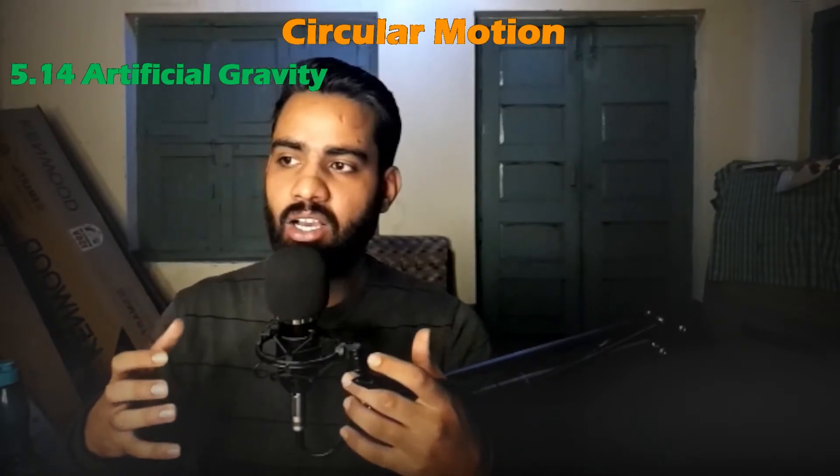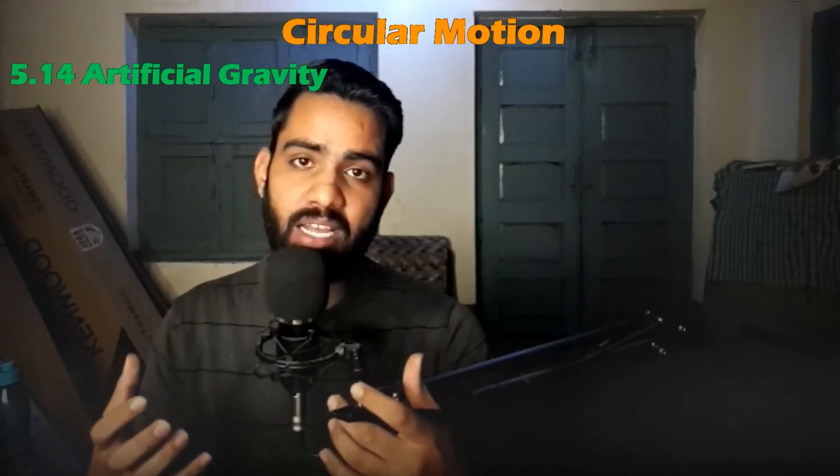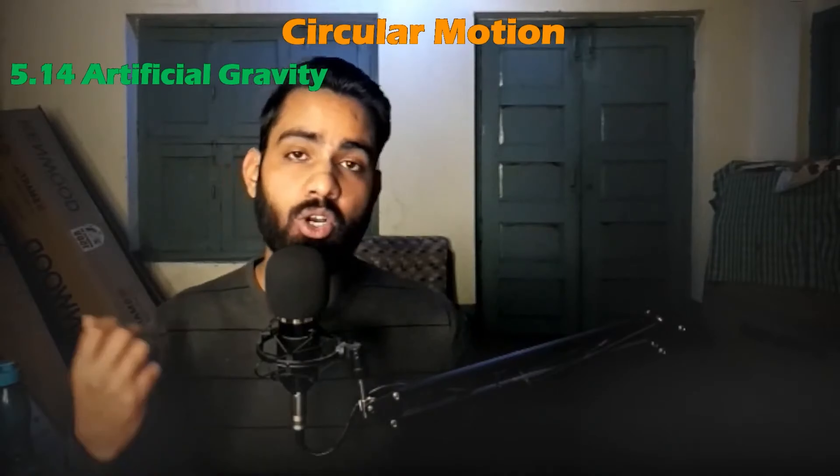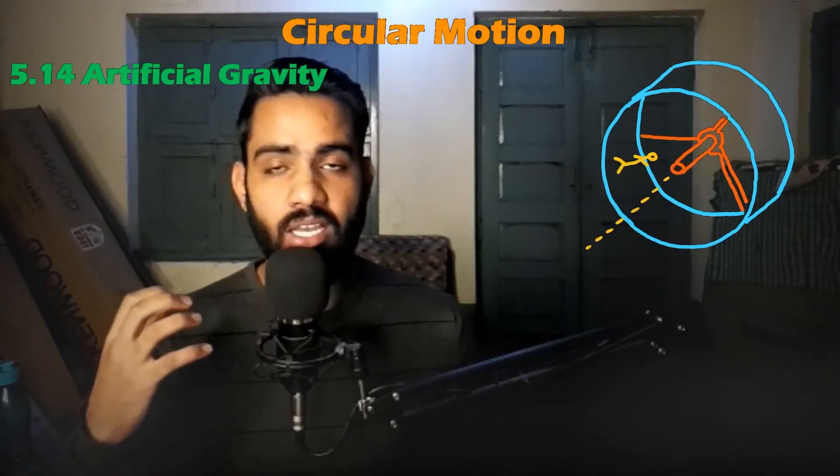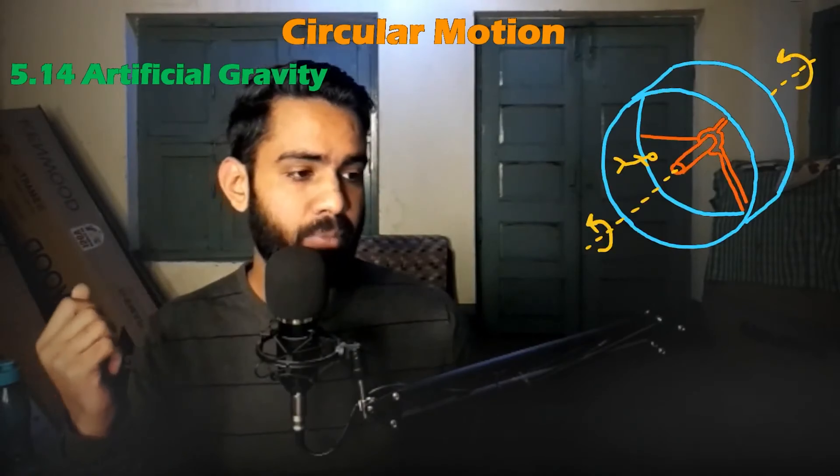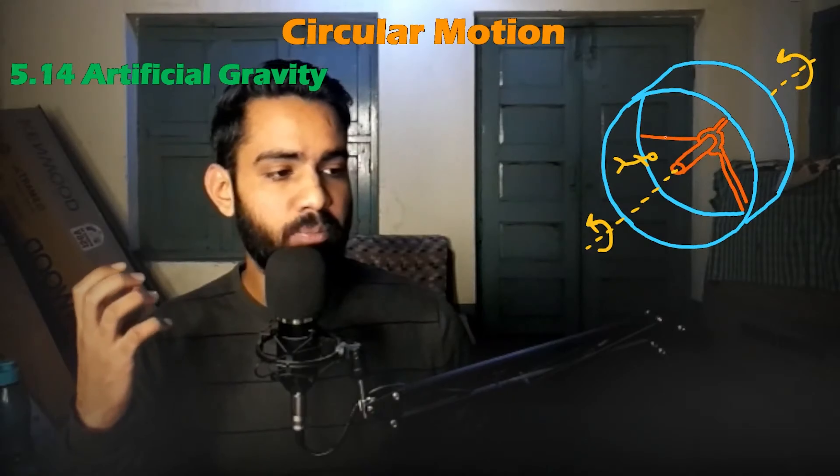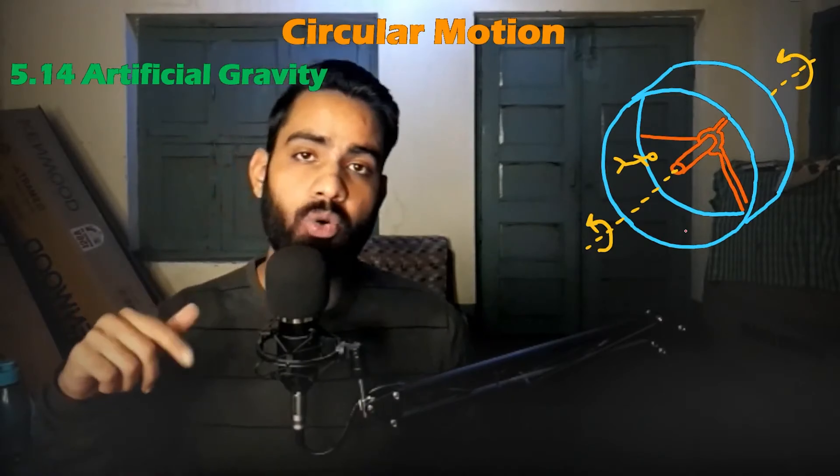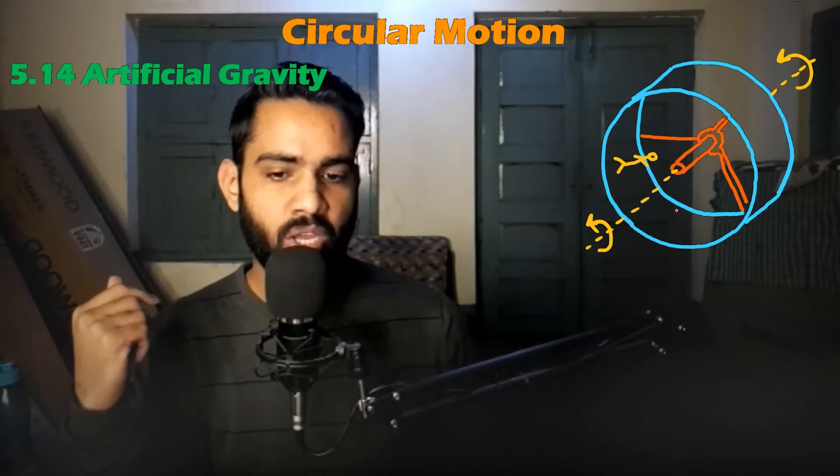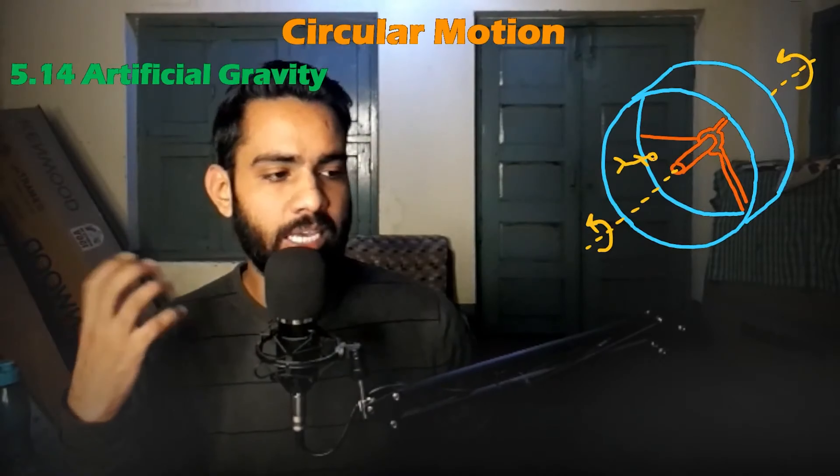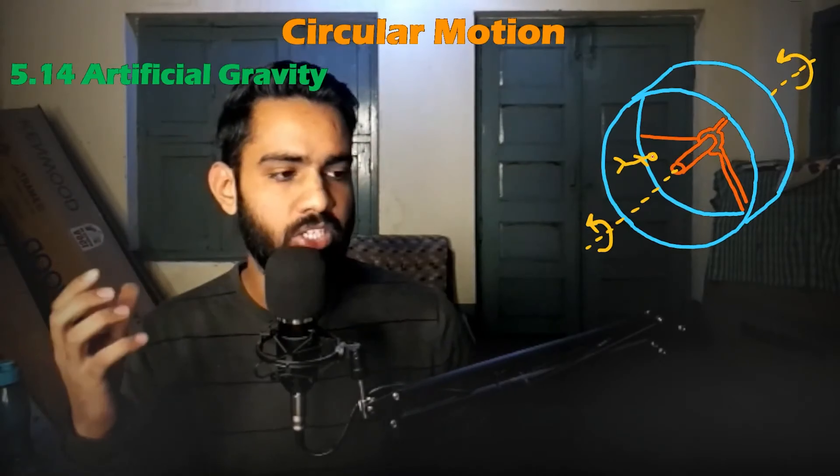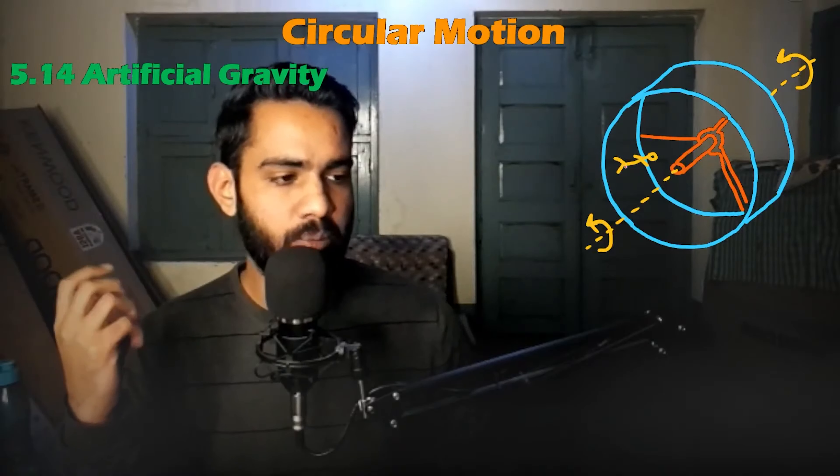So hypothetically, there's a concept that in space there can be artificial gravity. The concept is that our ship will rotate about some axis. In that case, if we have this ship which is in space which rotates, we also rotate.